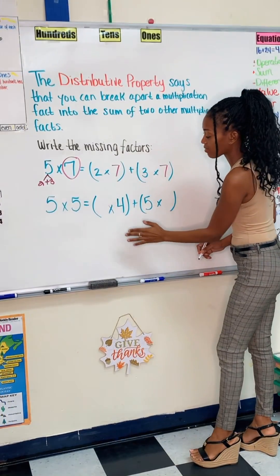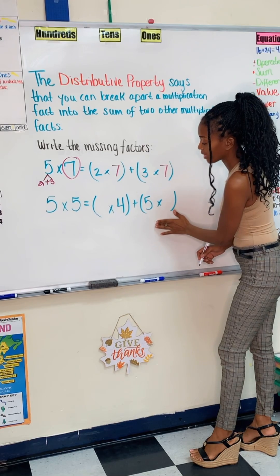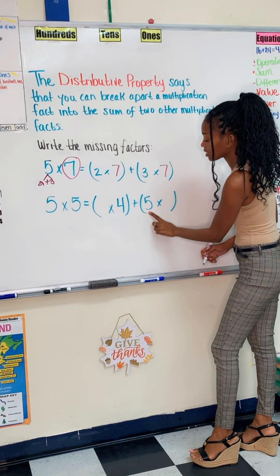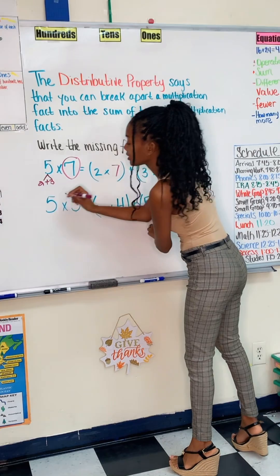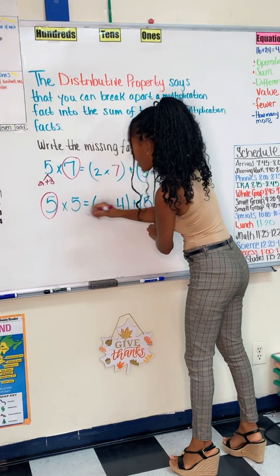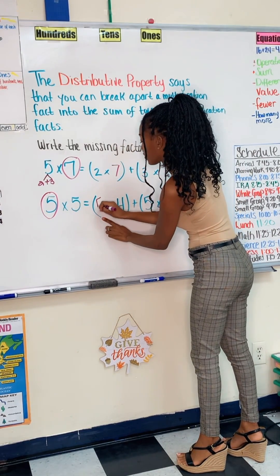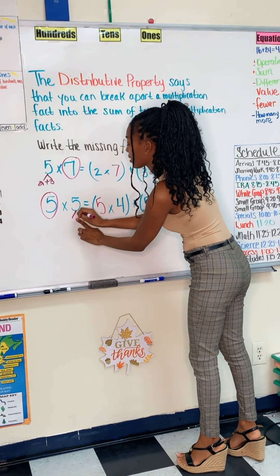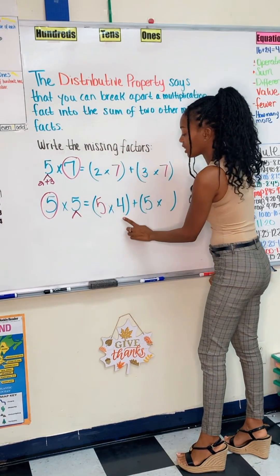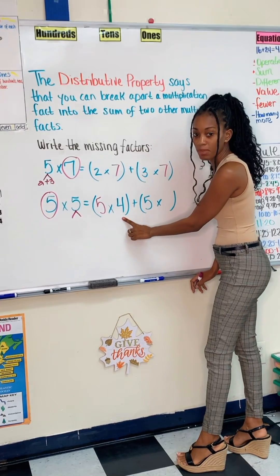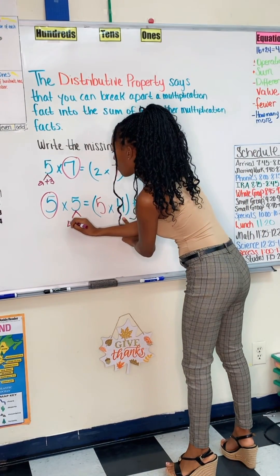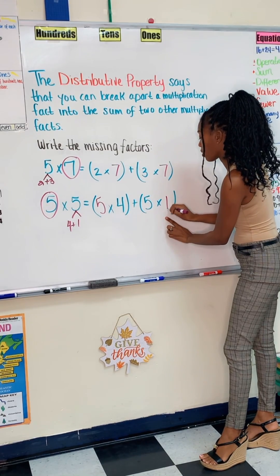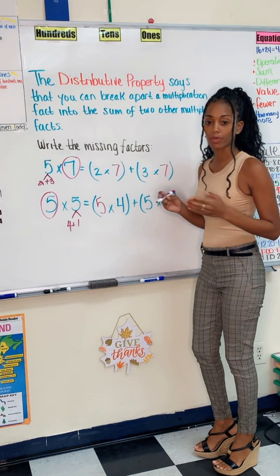We have five times five. And again, you can see we've already given us some factors, the four and the five. So since the five is here, I'm going to decide to double the five and also put the five right here. So now I know I have to break apart this five here. We've already given me four, so I'll do four plus one equals five. Therefore, one goes here and we're done.